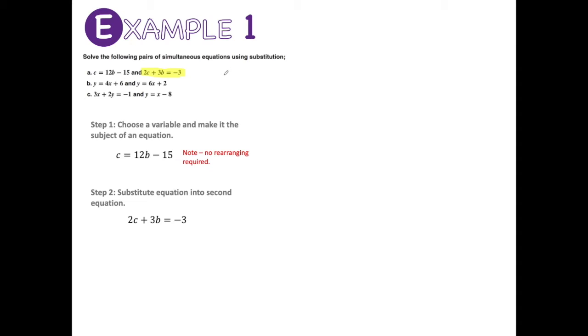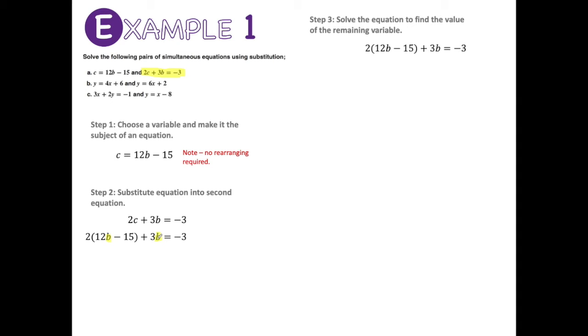Applying step two, we've got 2c plus 3b equals negative 3, and substituting c equals 12b minus 15, it becomes 2 times (12b minus 15) plus 3b equals negative 3. You'll see now that the only variable in that equation is b — I no longer have an equation with both c and b. So now that I've got one variable, I can go ahead and solve that equation by expanding the brackets.